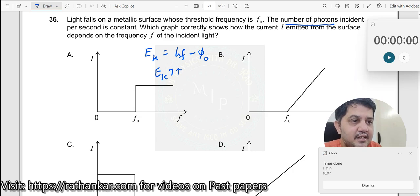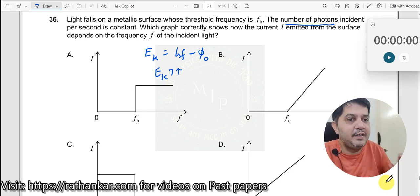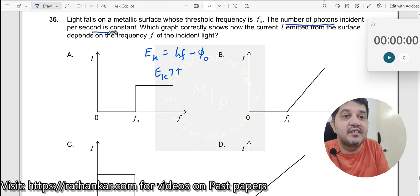The reason is because we know that when you increase the intensity, the photoelectric current will also increase. But here very clearly it is said number of photons incident per second is constant. You are not increasing the number of photons. You are only increasing the energy of the photon. So therefore, the current will not rise.